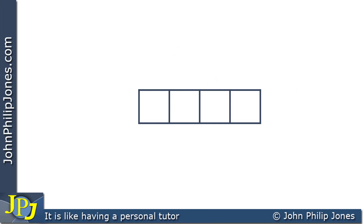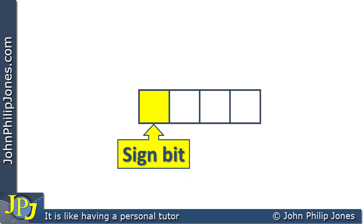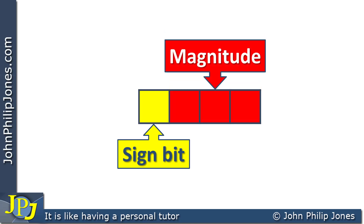If we consider signed magnitude for a nibble, we have a format where one bit represents the sign bit and the remaining three bits represent the magnitude. It's referred to as sign magnitude representation, shown here for a nibble, but this equally applies to a byte of 8 bits, 16 bits, 32 bits — you can have sign magnitude for differing sizes of binary. They all have in common a sign bit where 0 represents positive and 1 represents negative.